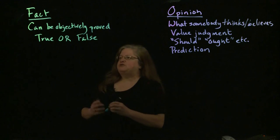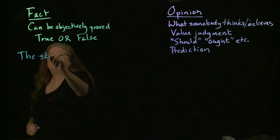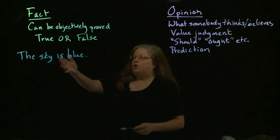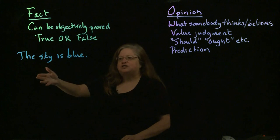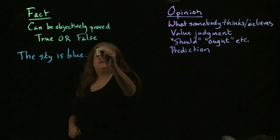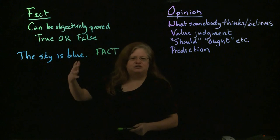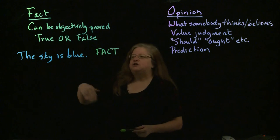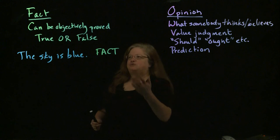For example, we might take a statement like 'the sky is blue.' This is something we can go out and test — we can go outside and look up and see whether the sky is blue. So that makes this a fact. And if I go outside and it's a cloudy, rainy day and the sky is not blue, it's still a fact. It's just a false fact. When you can test it and prove whether it's true or false, that lets you know it's a fact.